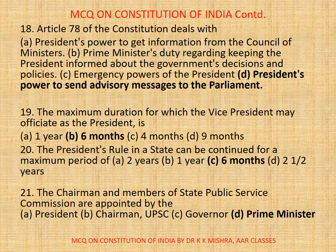Question number 18. Article 78 of the Constitution deals with: a) President's power to get information from the Council of Ministers, b) Prime Minister's duty regarding keeping the President informed about the Government's decisions and policy, c) Emergency powers of the President, d) President's power to send advisory messages to Parliament. Correct option is b) Prime Minister's duty regarding keeping the President informed about the Government's decisions and policy.